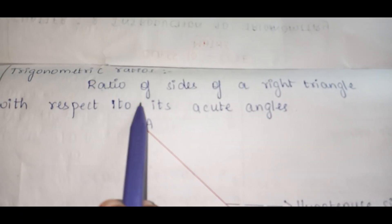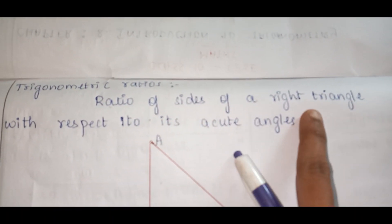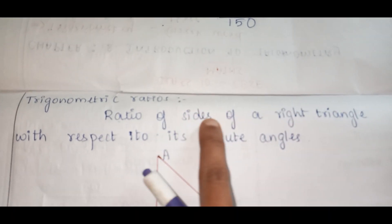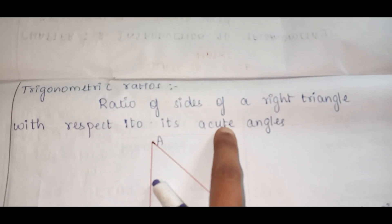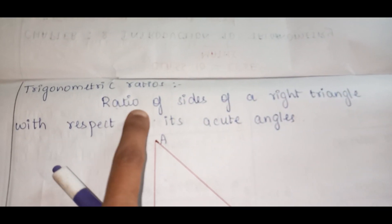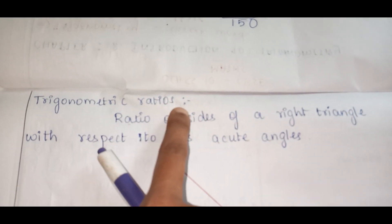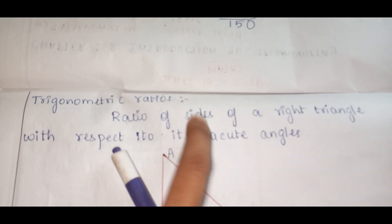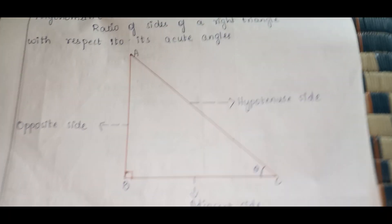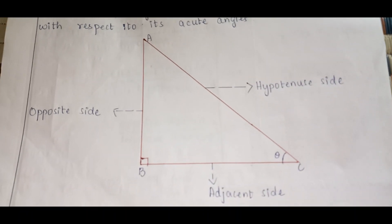Now back to the chapter. What is trigonometric ratio? Trigonometric ratio means we are going to find the ratio of the sides of the right triangle with respect to its acute angle. With respect to the angles inside a triangle, we will find the ratio of the sides, and these ratios are called trigonometric ratios. Trigonometry deals with right-angle triangles.